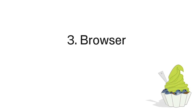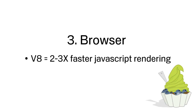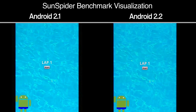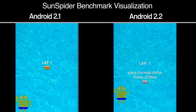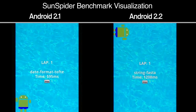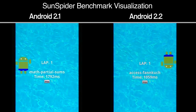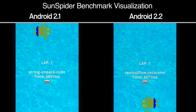We're continuing to make the browser better and faster. Android 2.2 introduces the V8 JavaScript engine, which provides a 2 to 3x improvement in JavaScript rendering times compared to Android 2.1. You can see the difference in these side-by-side visualizations of the respective SunSpider JavaScript benchmarking test results.